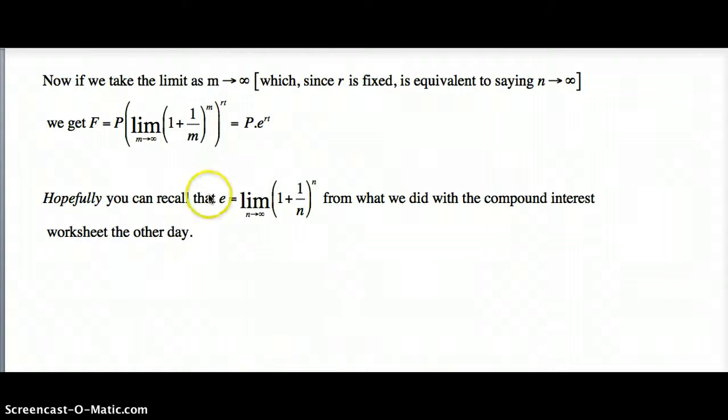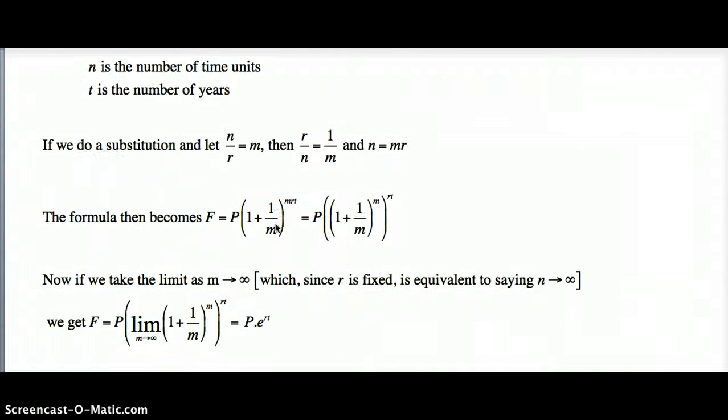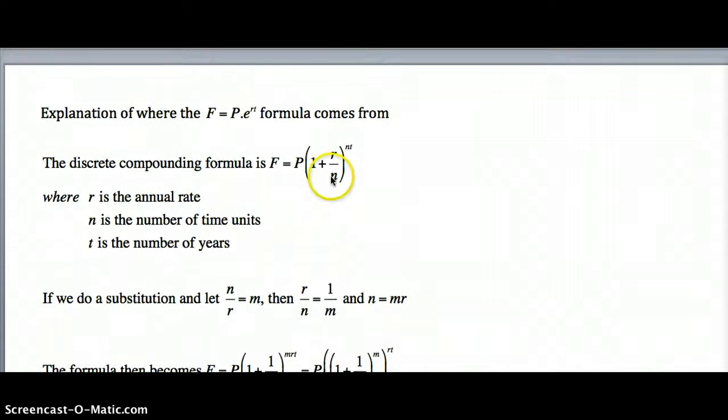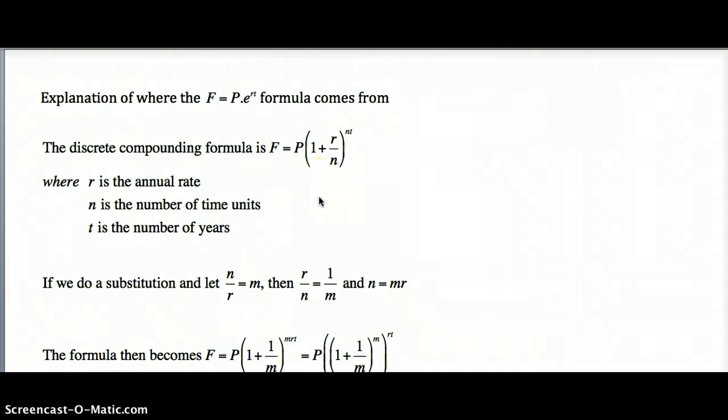It's just on its own down here at the bottom. As we looked at the other day, the limit as of (1 plus 1 over n) to the power of n is e as n tends to infinity. Now we can't do that at the moment because we don't have it in that formula. Obviously what we do is we just swap r over n for 1 over m.